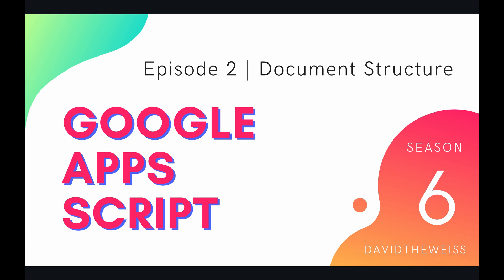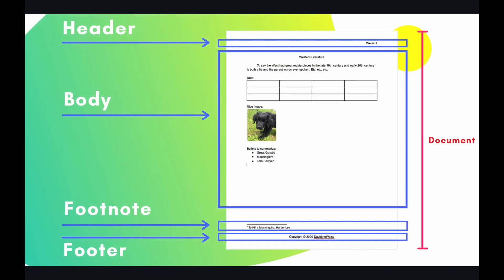Welcome to episode 2 of our document service playlist on the Google Apps Script course. In this video we're going to be talking about how a Google document is structured. On this slide I have diagrammed a basic Google document, and from top to bottom that is what is considered a document according to Apps Script. Within that document there are four main sections: header, body, footnote, and footer.